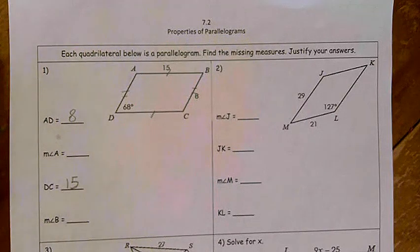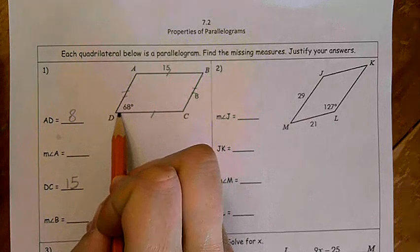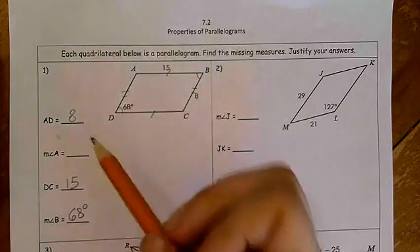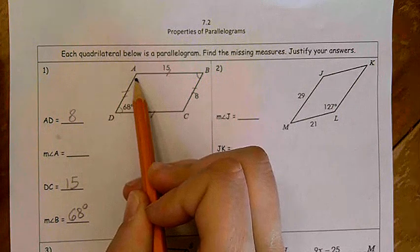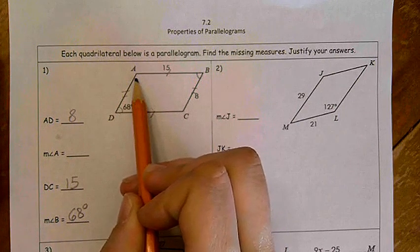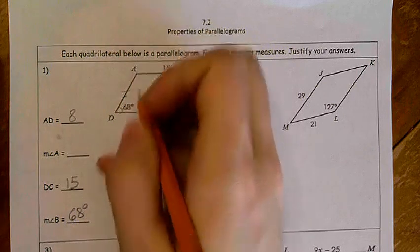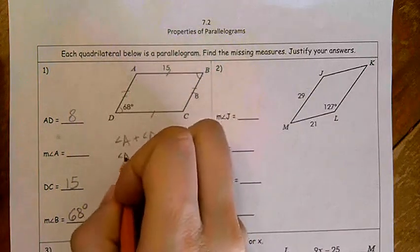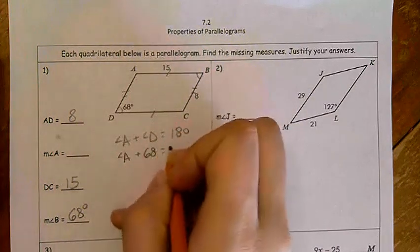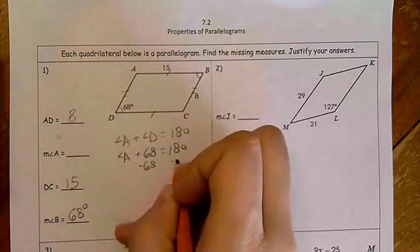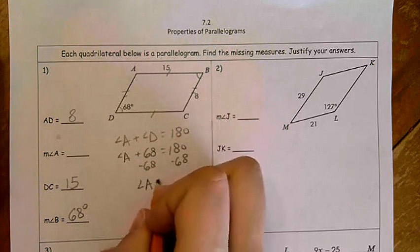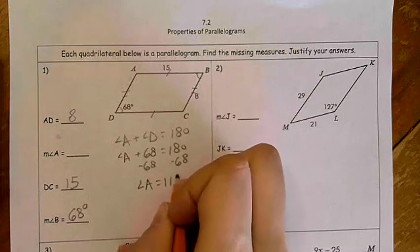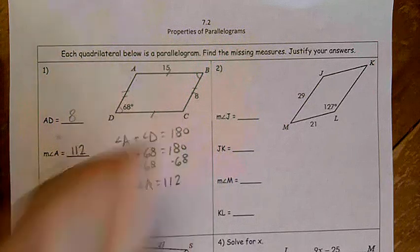So then we have that angle D is 68. Angle D is opposite angle B, so angle B is also 68 degrees. We need to figure out what angle A is. That's the biggest question mark that we have left. Because of the consecutive angles theorem, we know that angle A plus angle D equals 180. We're looking for angle A. Our angle D is 68 degrees, so when we subtract 68 from 180, we know angle A is equal to 112.